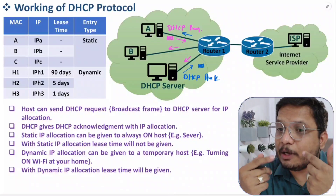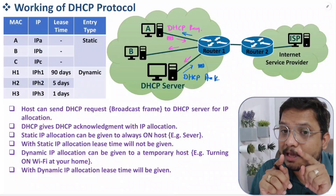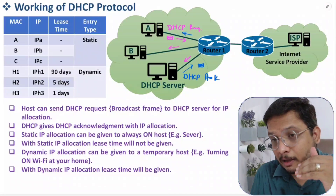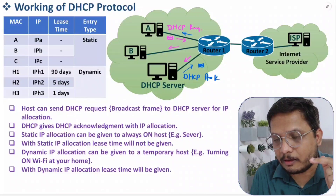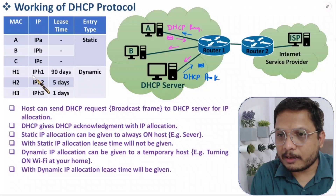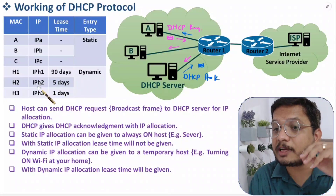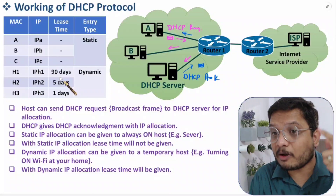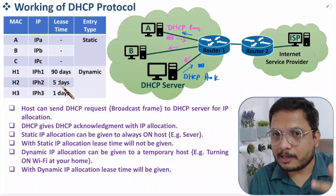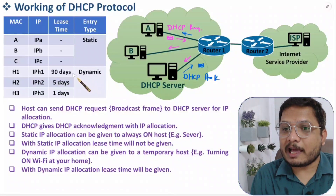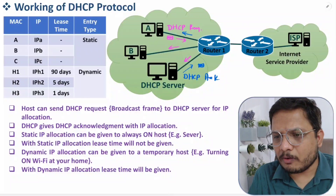The host will ask for an IP and the DHCP server will give an IP. When the DHCP server gives an IP to a particular host, it will give two things: one is lease time and the second is renewal time. It will say that for this many days you can use this IP, and also that you will have to renew it after some time — even if you can use it for those many days, you will also have to do a renewal operation. That is how things work in dynamic IP assignment using a DHCP server.